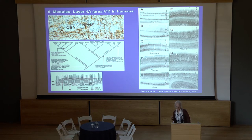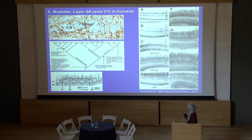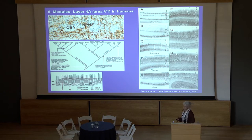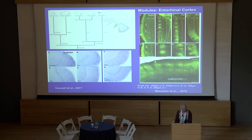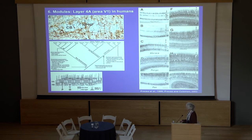Layer 4A sits above 4C and is geniculate recipient. Todd Preuss, years ago, did a battery of stains — including calbindin and non-phosphorylated neurofilament — in post-mortem tissue and showed a wide variety of organization in this layer across different primate and sub-primate species. His point was that layer 4A in human was neurochemically different from 4A in other animals, in a way that seemed to suggest a different organization of the magnocellular versus the parvocellular pathway. This comes back to the theme of how things are arranged — you may have the same elements, but they're arranged in different ways.